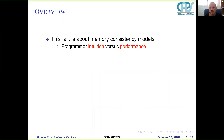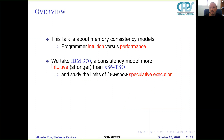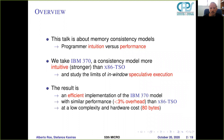I'm going to talk about memory consistency models and their trade-off between programmer intuitions and performance. In this work we take IBM 370, a consistency model that is stronger than x86-TSO and therefore more intuitive, and study the limits of in-window speculative execution. The result is an efficient implementation of the IBM 370 model with similar performance to x86-TSO and at a low complexity and hardware cost.